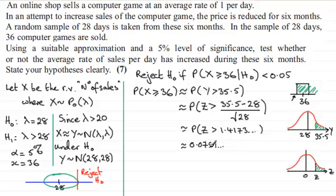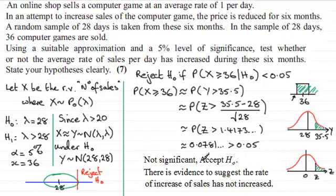This value here is greater than 5%—5% being 0.05. So what does that mean? It means that it's not significant. We're going to have to accept the null hypothesis. In other words, it's not significant; we accept the null hypothesis, and there is evidence to suggest that the rate of increase of sales has not increased.